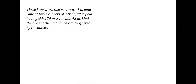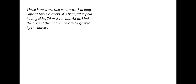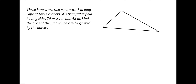In this question, three horses are tied each with a seven meter long rope on three corners of a triangular field having sides given. We have to find the area of the plot that can be grazed by these horses. Let's make a triangle — the dimensions are 20 meters, 34 meters, and 42 meters.